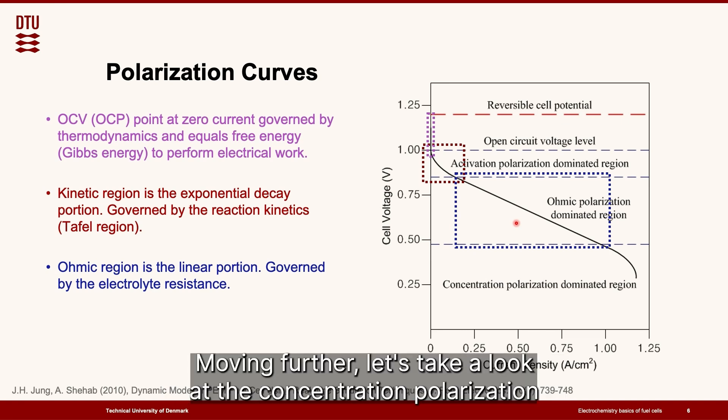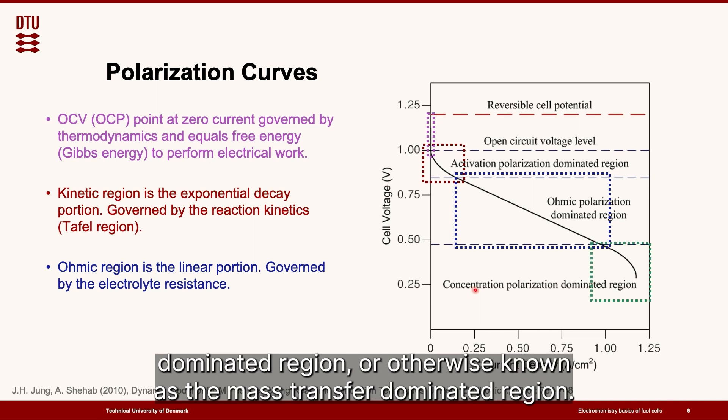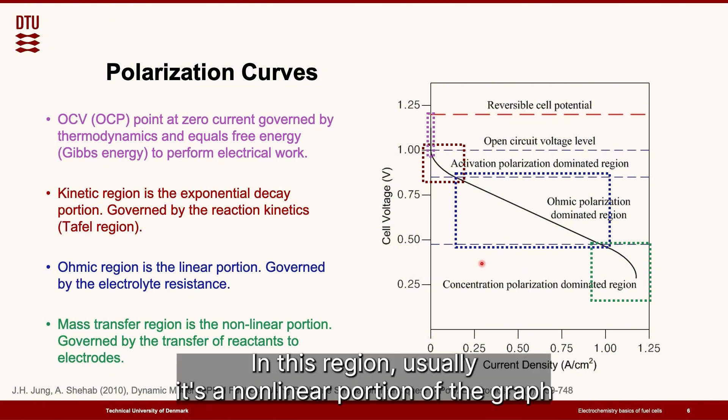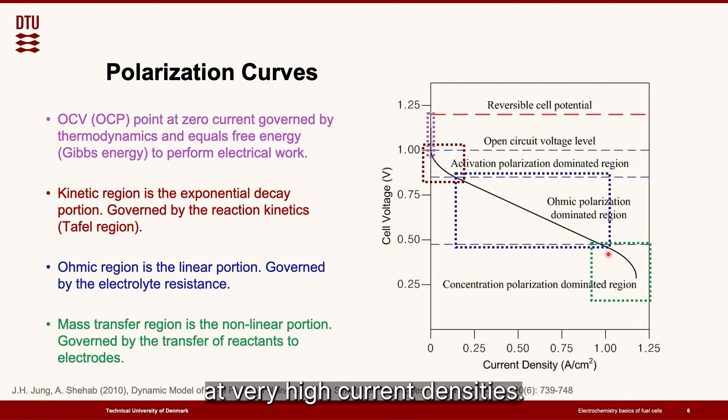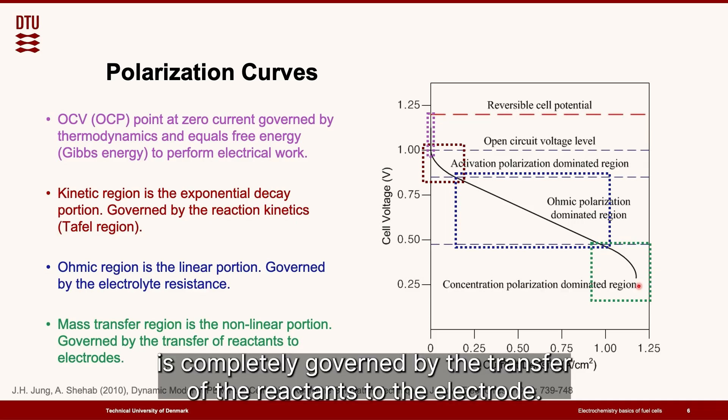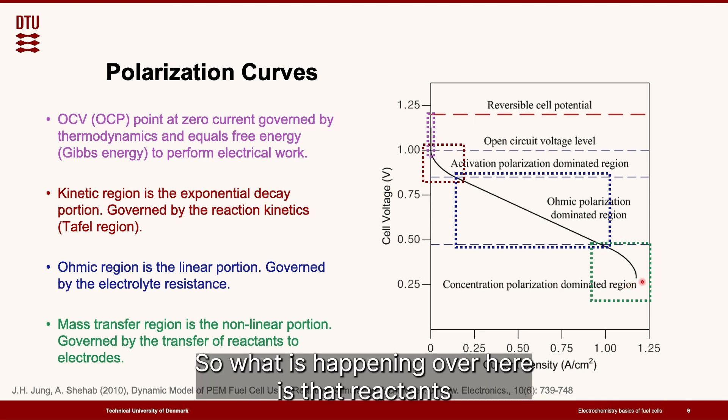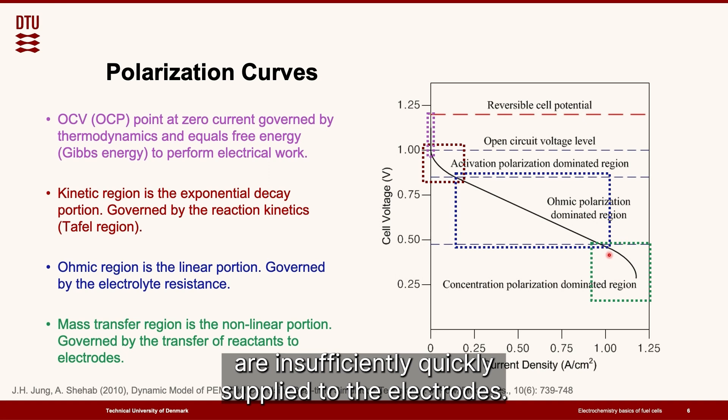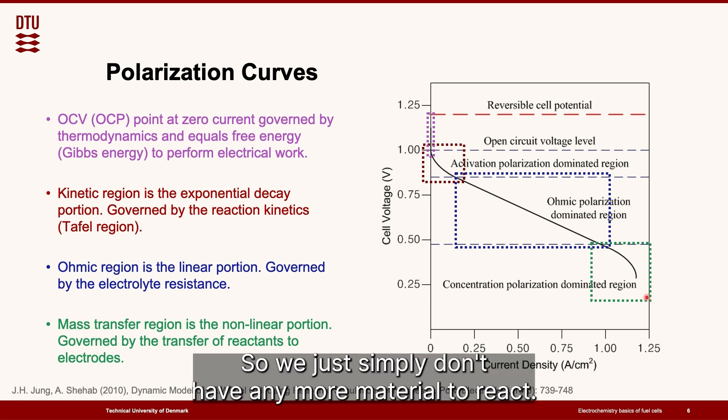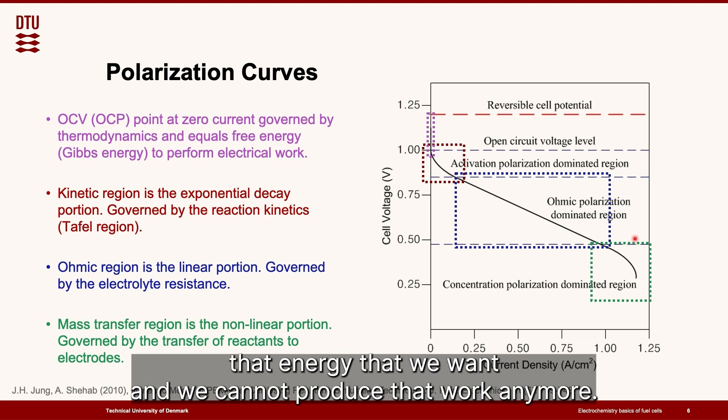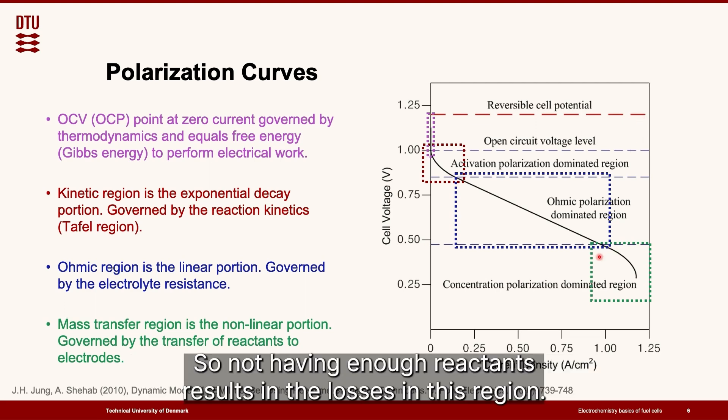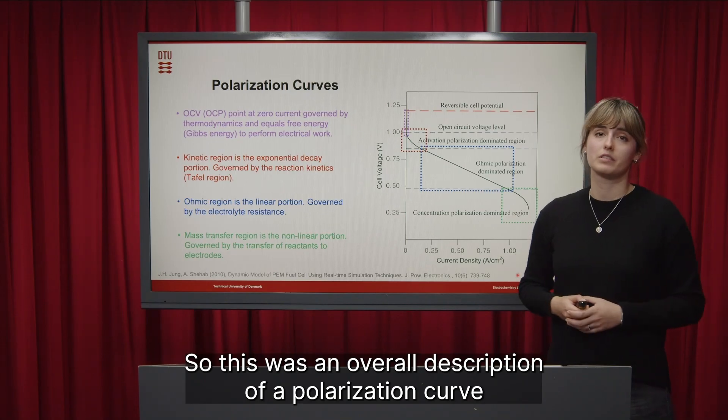Moving further let's take a look at the concentration polarization dominated region or otherwise known as a mass transfer dominated region. In this region usually it's a non-linear portion of the graph at very high current densities. This portion over here is completely governed by the transfer of the reactants to the electrode. So what is happening over here is that reactants are insufficiently quickly supplied to the electrodes so we just simply don't have any more material to react so we cannot produce that energy that we want, we cannot produce that work anymore. So not having enough reactants results in the losses in this region.